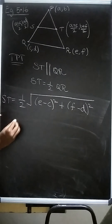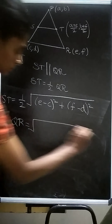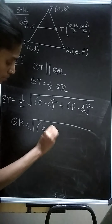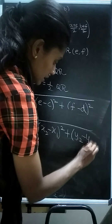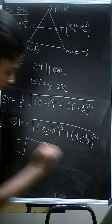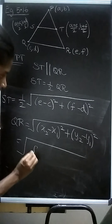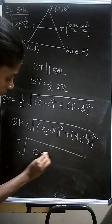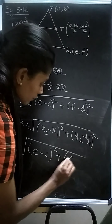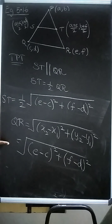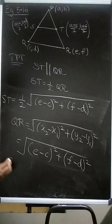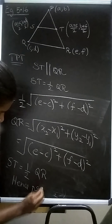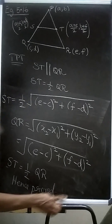Now QR = √((e−c)² + (f−d)²) using the distance formula with Q = (c, d) and R = (e, f). Therefore ST = (1/2) × QR, hence ST = half of QR. Hence proved. Thank you.